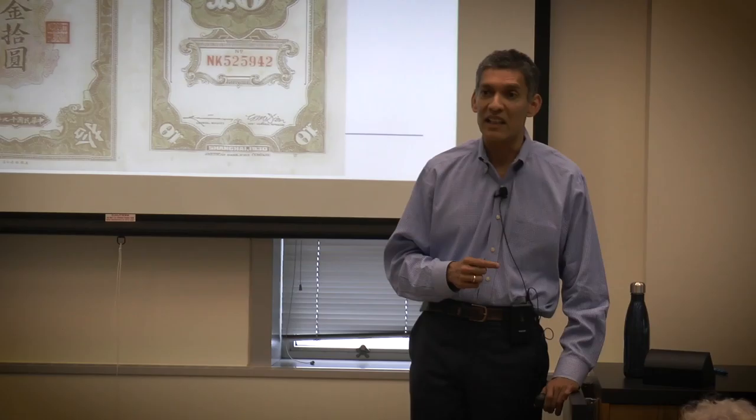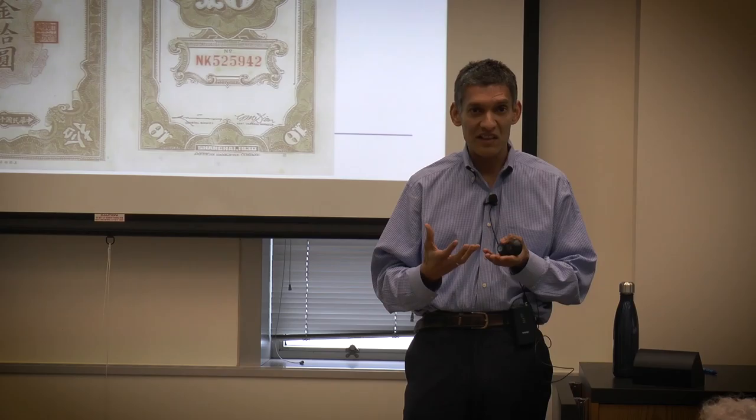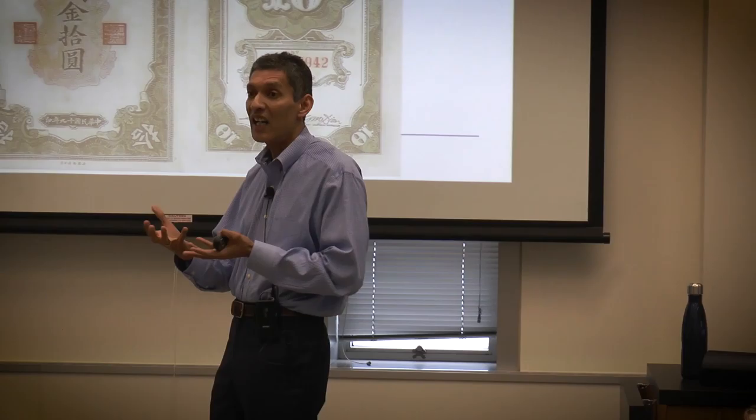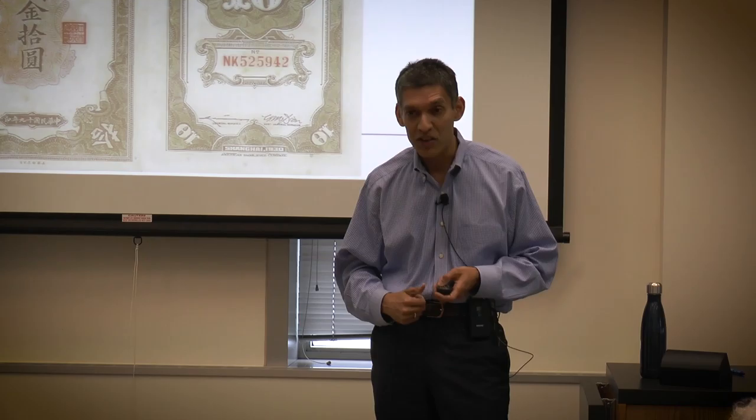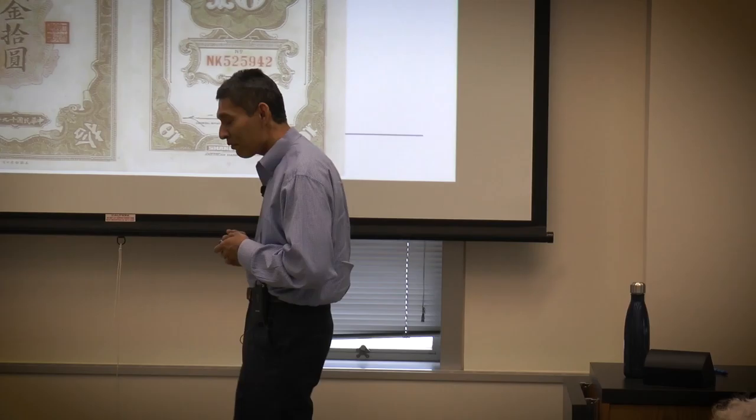Then they put into place a reform in 1935 called the Fabi reform. The Fabi notes were essentially new currency notes issued by the Kuomintang government with one important distinction — they were no longer unsupported. They were backed by US dollars and British pound sterling. These were notes where confidence was backed up by other hard currencies. The British pound sterling was a dominant currency at the time, but the US dollar was beginning to come into its own. This is an image of Chiang Kai-shek at the time.